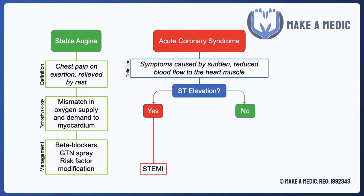If there is no ST elevation, you look at the troponins. Troponins are enzymes which are typically found within the cardiomyocytes, and hence you wouldn't expect there to be high levels within the peripheral blood. However, in conditions where you have damage inflicted on the heart muscle, those troponins will leak out of those cells and then be detectable within the peripheral blood. So if you have high troponins, that's suggestive of cell death and hence suggestive of an infarction.